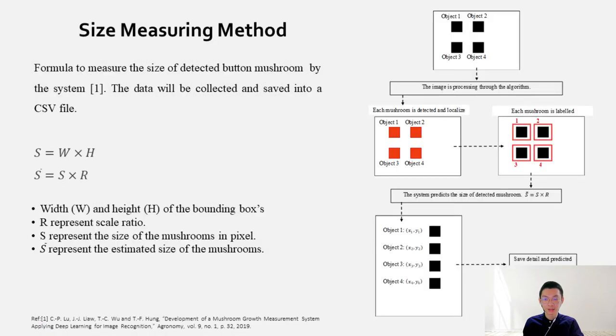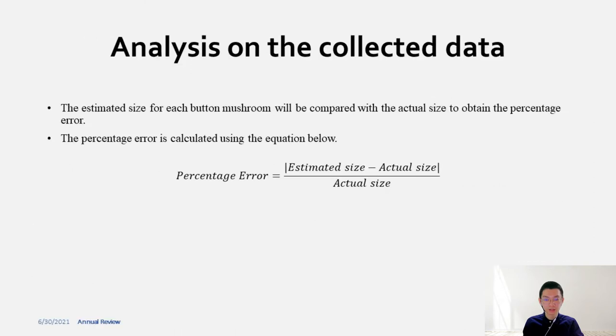Next is the size measuring method used in the system. The formula is used to estimate the size of detected button mushroom. The data will be collected and saved into a CSV file. The data collected from experiment will undergo analysis. The estimated size for each button mushroom will be compared with the actual size to obtain the percentage error. The percentage error is calculated using the equation shown in the slide.